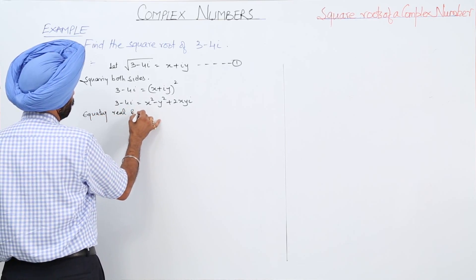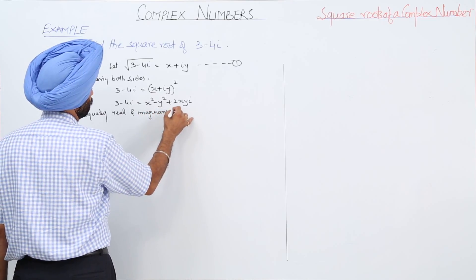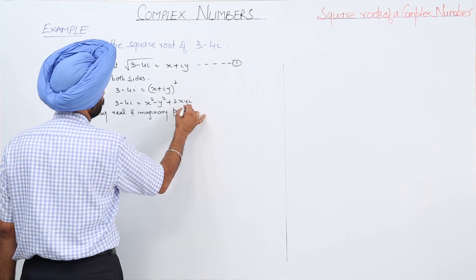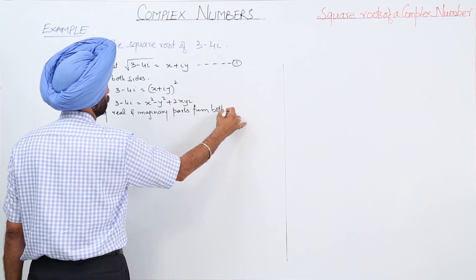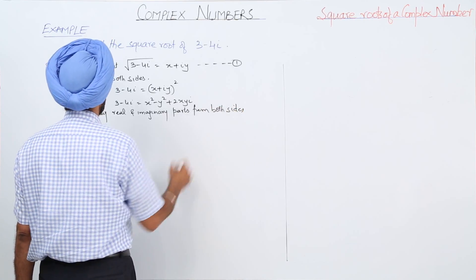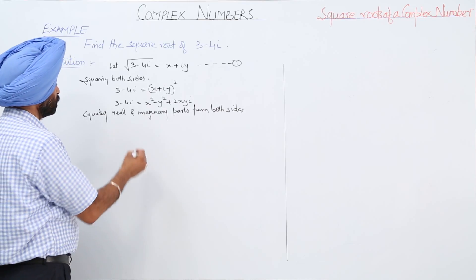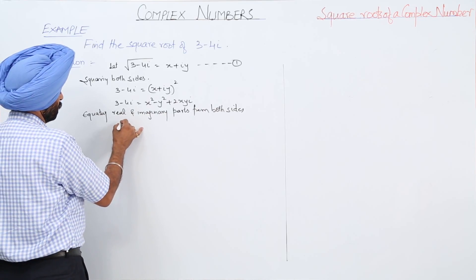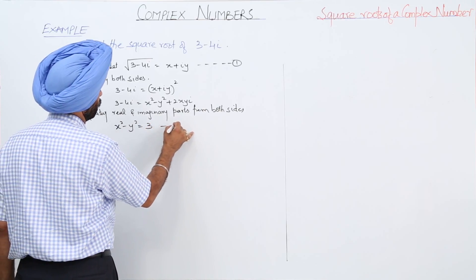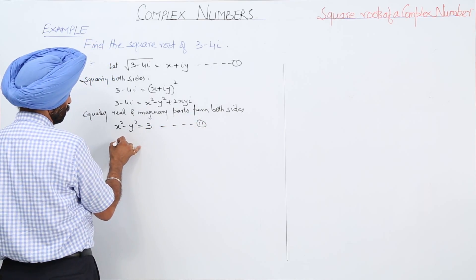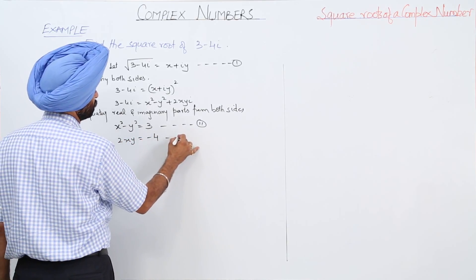Equating real and imaginary parts from both sides, we get: x squared minus y squared is equal to 3 — equation 2, and 2xy is equal to minus 4 — equation 3.